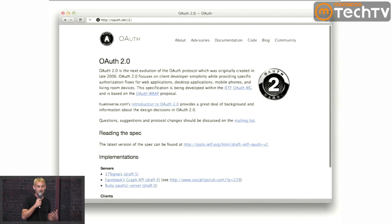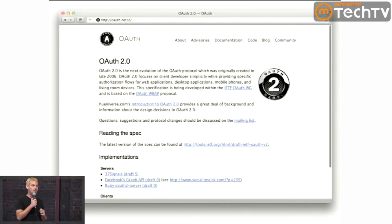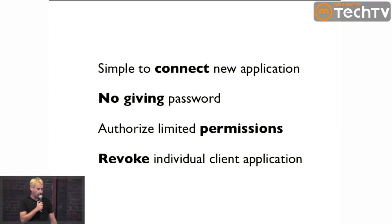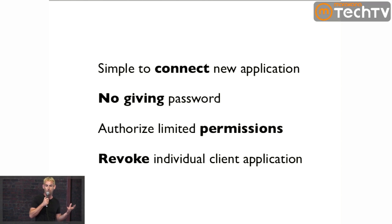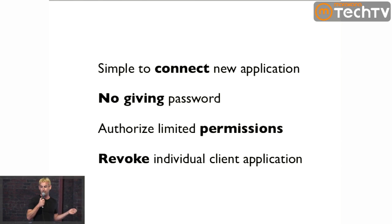The solution to that problem is basically the OAuth specification. There are two flavors — I'm mostly going to talk about OAuth 2 because that's what the code I'm going to show implements. If you're using Facebook Connect, that uses OAuth 2. If you're using Twitter, that uses OAuth 1. OAuth is trying to make it very easy for people to connect new applications. You never give away your passwords to third-party applications, and you can authorize with limited permissions.